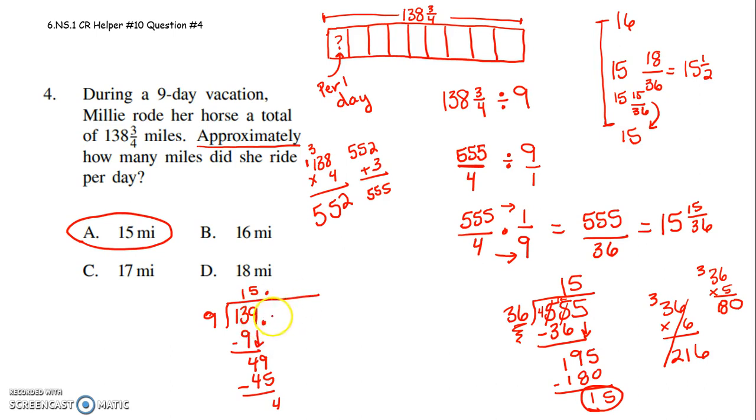Could do a little decimal point here if you'd rather. Drag down a 0. 9 goes into 40 four times. 4 times 9 is 36. And here's the dealio. See how this is 15.4? That's less than 5. That's how I would then immediately know to round down to 15. So if it says approximately, I would say estimate at the beginning, round at the beginning, and then divide out. If yours says exactly, then you've got to follow this whole process.